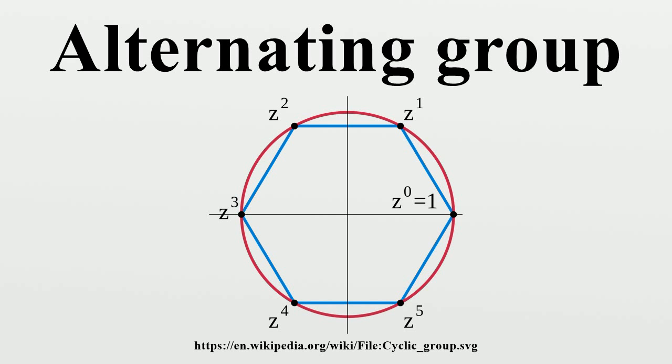Automorphism group: For n greater than 3, except for n equals 6, the automorphism group of An is the symmetric group Sn, with inner automorphism group An and an outer automorphism group Z2; the outer automorphism comes from conjugation by an odd permutation.